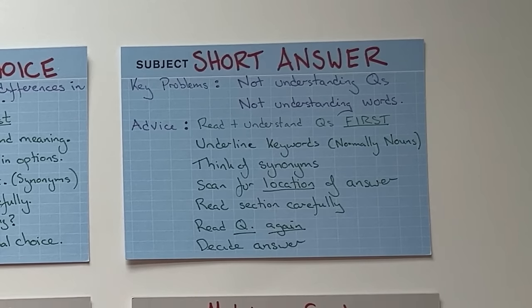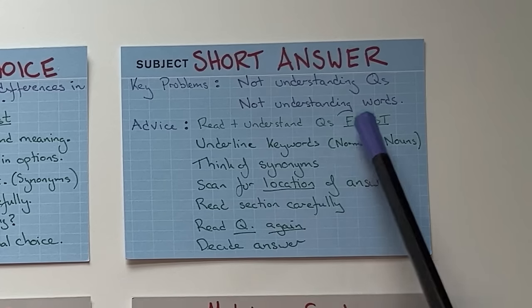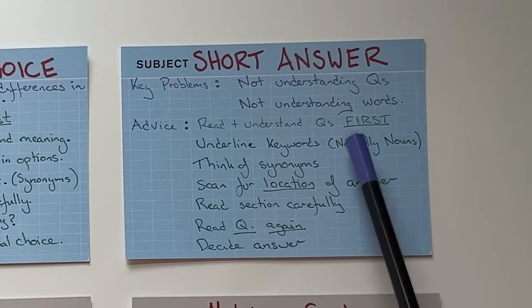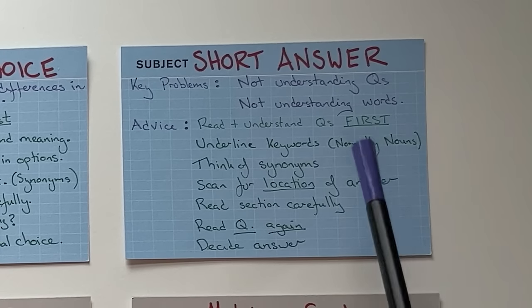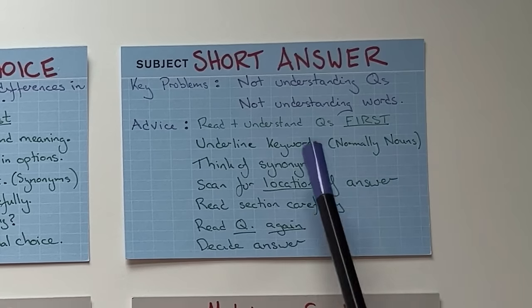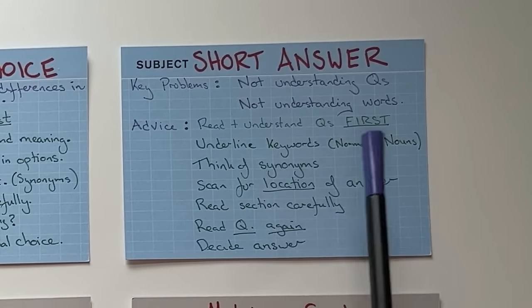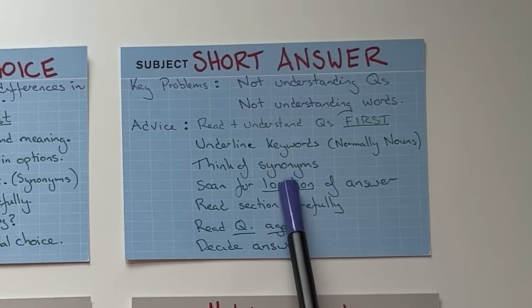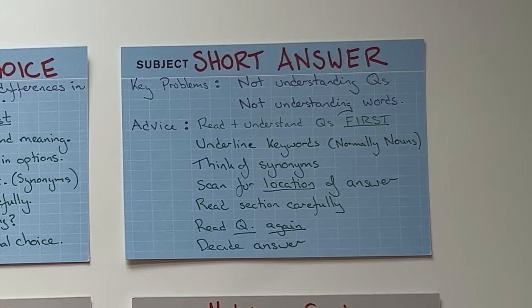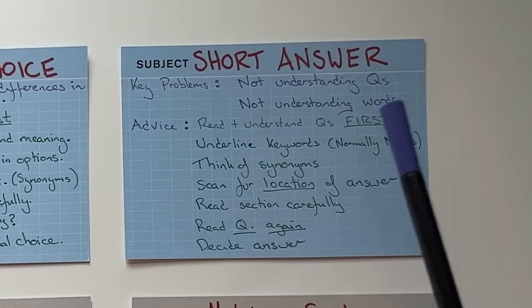For short answer questions: read and understand the questions first — don't get lost in the reading text. Underline any keywords within the questions — normally nouns and noun phrases: people, places, objects. Think of synonyms for those nouns, which will help you scan for the location of the answer. Remember, where before what. Once you understand the location, read the section carefully, read the question again, decide the answer and write it in.